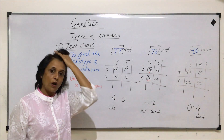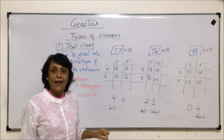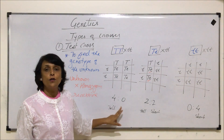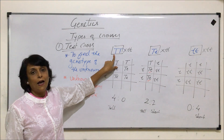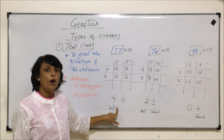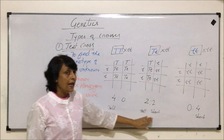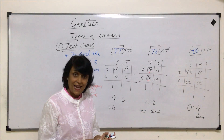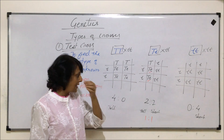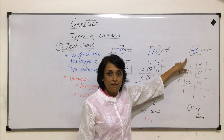Now if we backtrack — if a question asks that a test cross gives a ratio of four is to zero, what is the genotype of the unknown? The unknown is crossed with homozygous recessive and the ratio is four is to zero, so the genotype is homozygous dominant. If the ratio is two is to two, simplified to one is to one, then the unknown is heterozygous. If the ratio is zero is to four, the unknown is homozygous recessive.